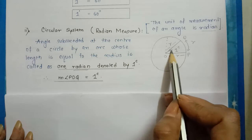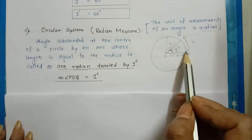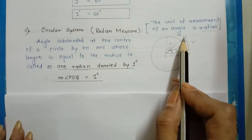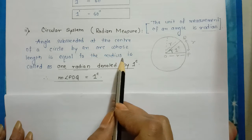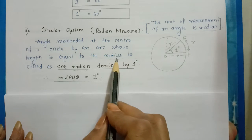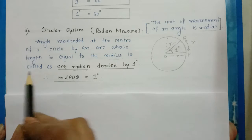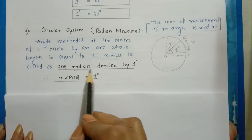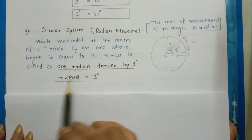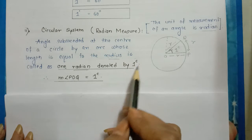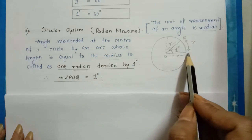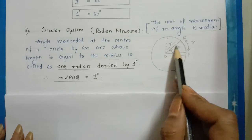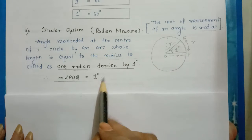The angle suspended at the center of the circle by arc PQ, where the arc PQ is equal to the radius, is called one radian, denoted by 1 raised to c. So the measure of angle POQ is one radian.